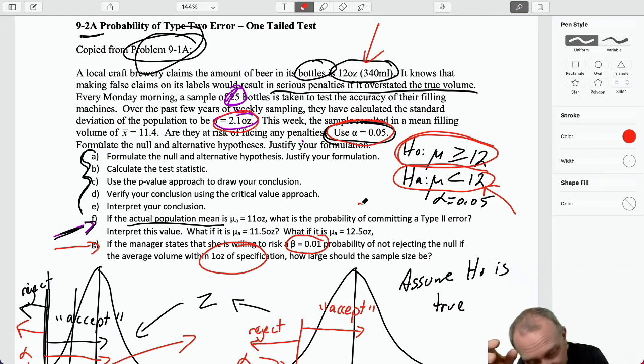So, if it's at 11 ounces, which, of course, that means the alternative is true. But, I'm only risking a 1% chance of committing that type 2 error if my sample size is 70. Good.